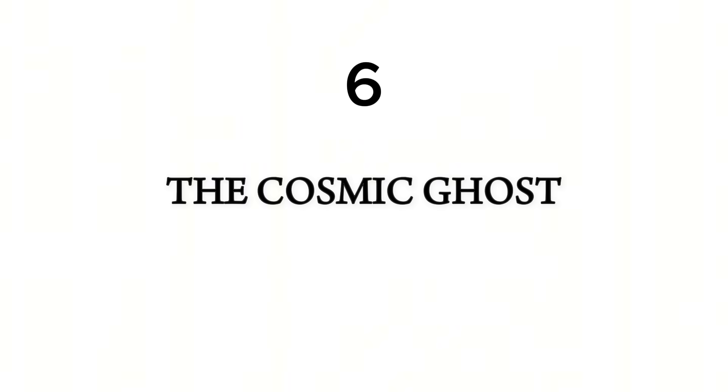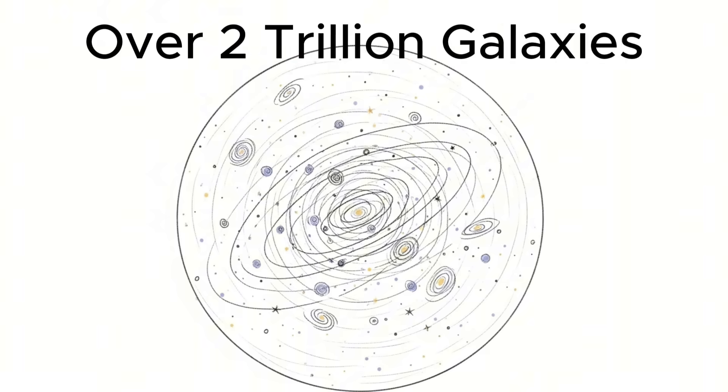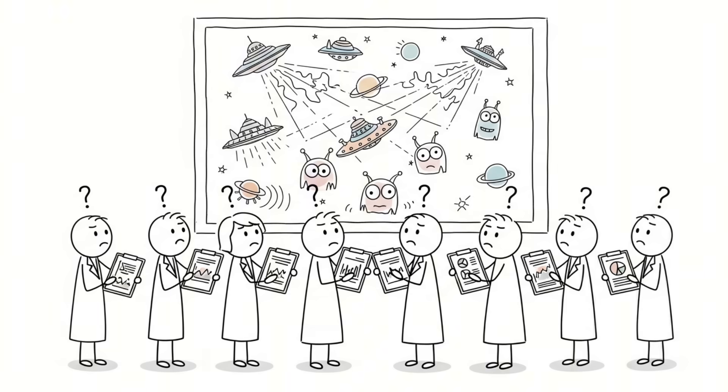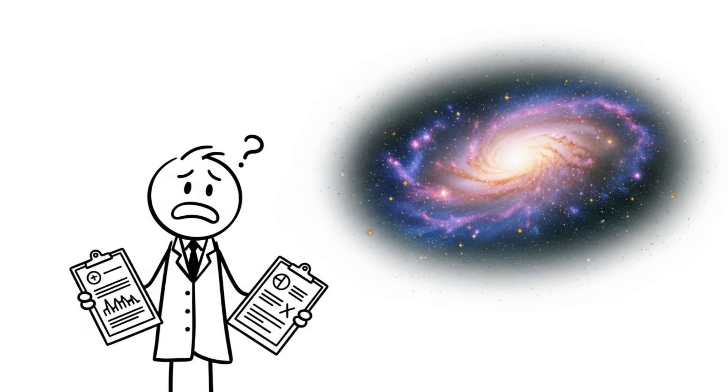Number six, the cosmic ghost. There are over 200 billion stars in our galaxy alone, and there are over two trillion galaxies in the observable universe. The math is simple. The sky should be swarming with signals filled with starships and life. The physicist Enrico Fermi asked a very simple question: where is everybody?